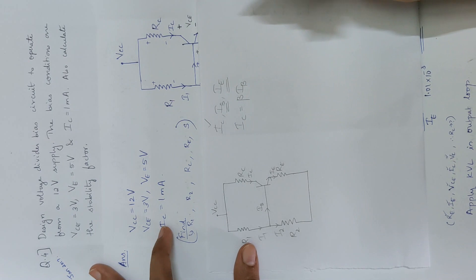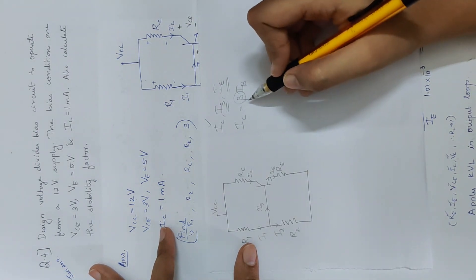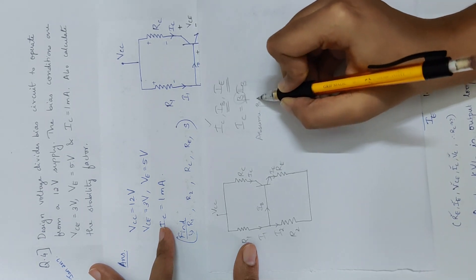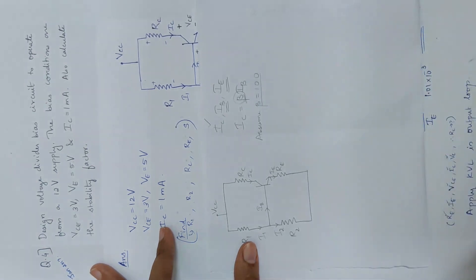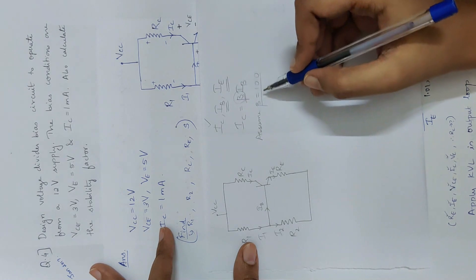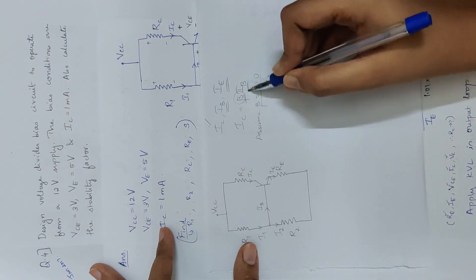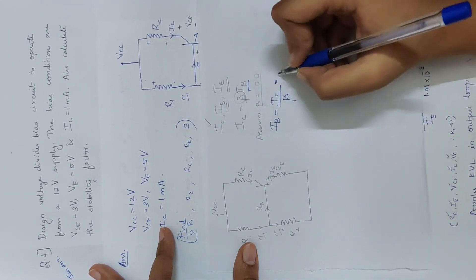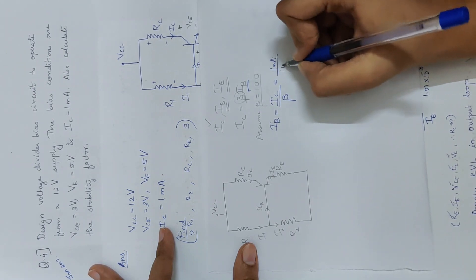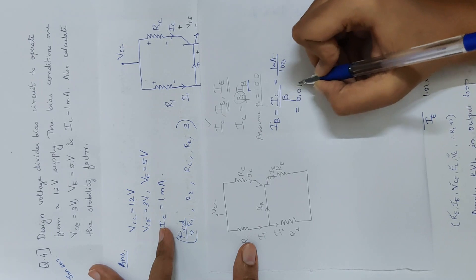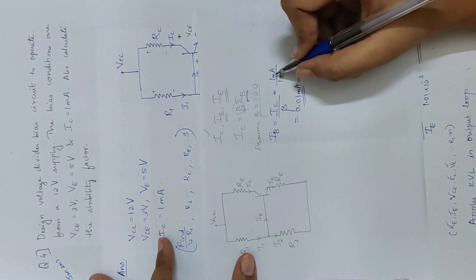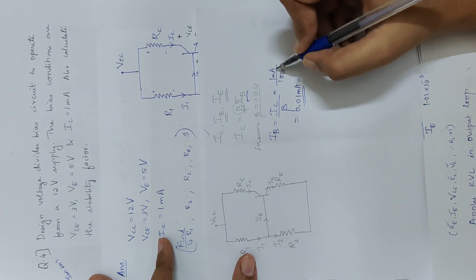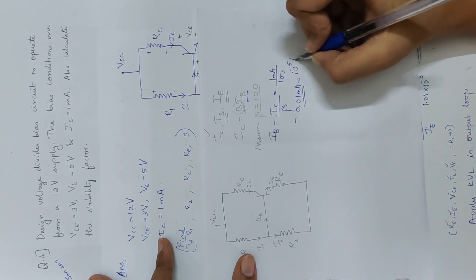Now we are going to look at the beta value. We will assume beta equal to 100. IB is equal to IC divided by beta, which is 1 milliAmpere divided by 100, giving 10 raised to minus 5 Ampere.